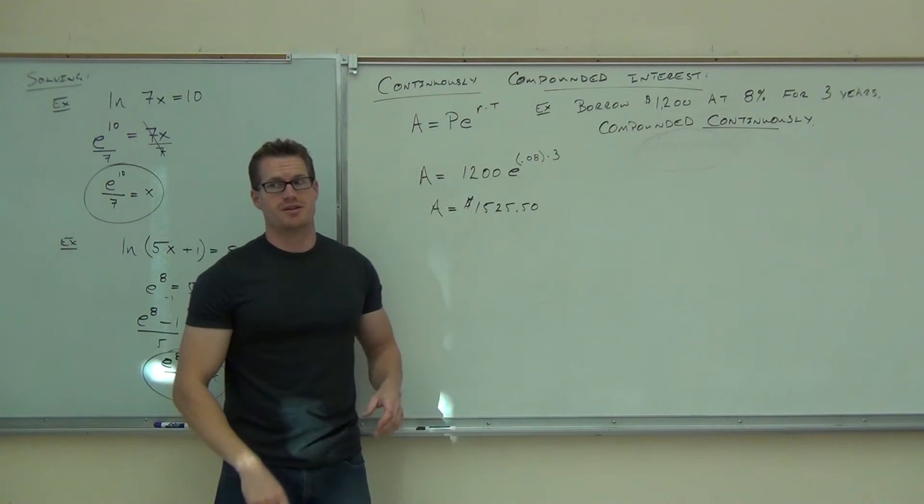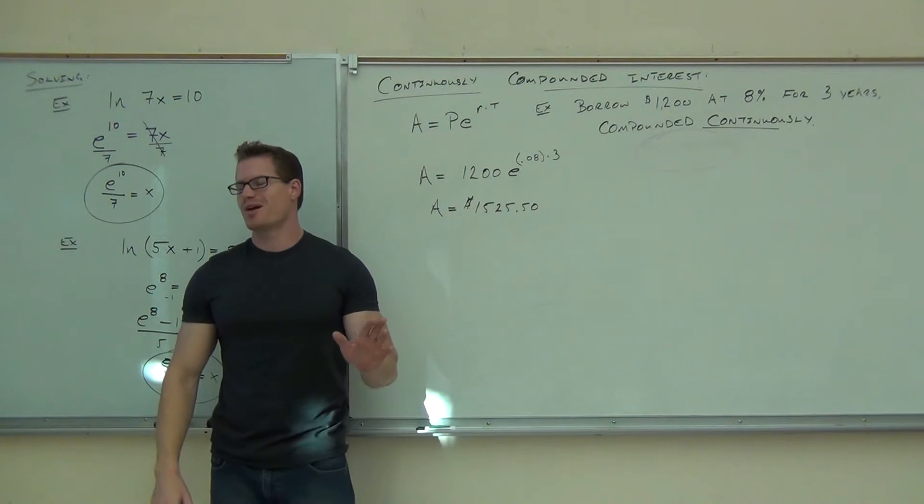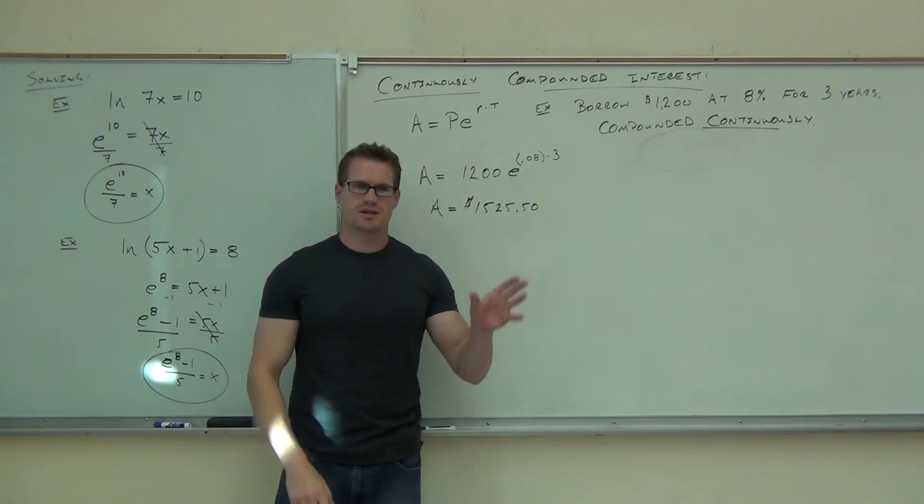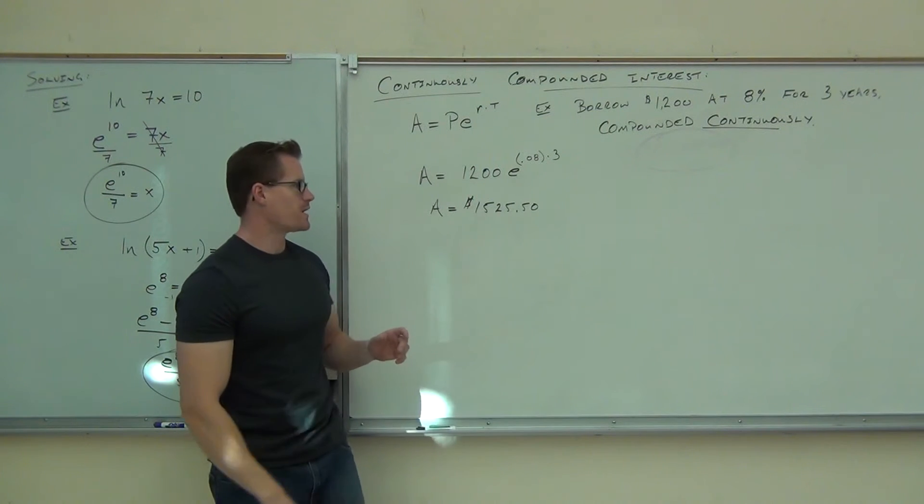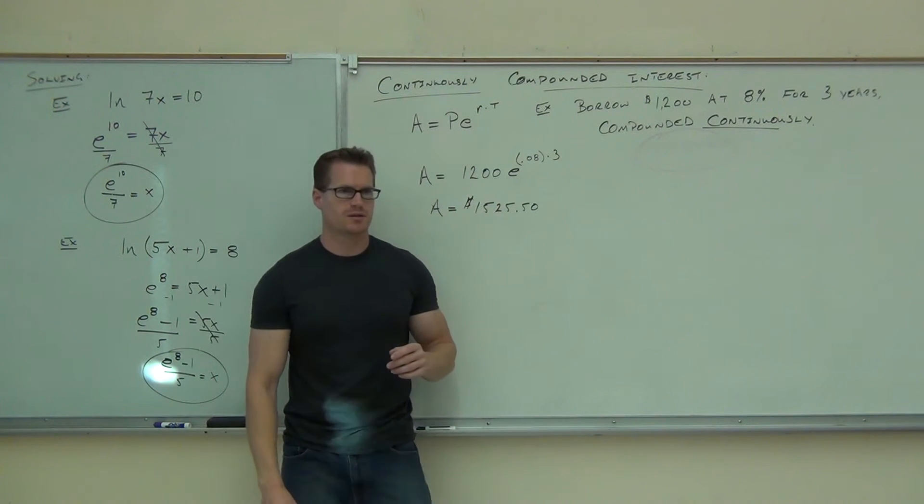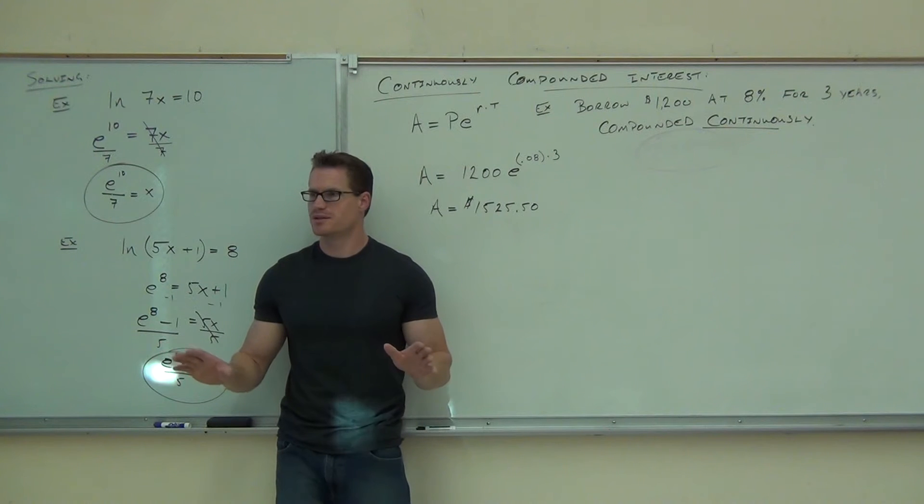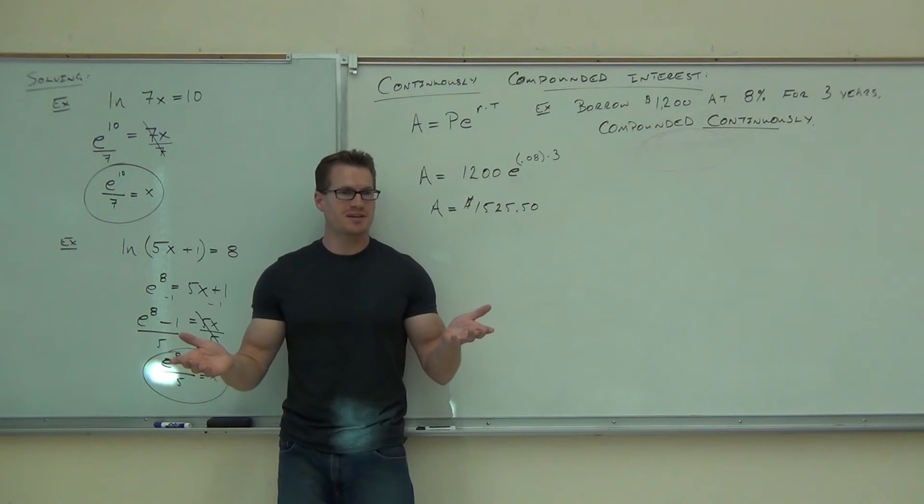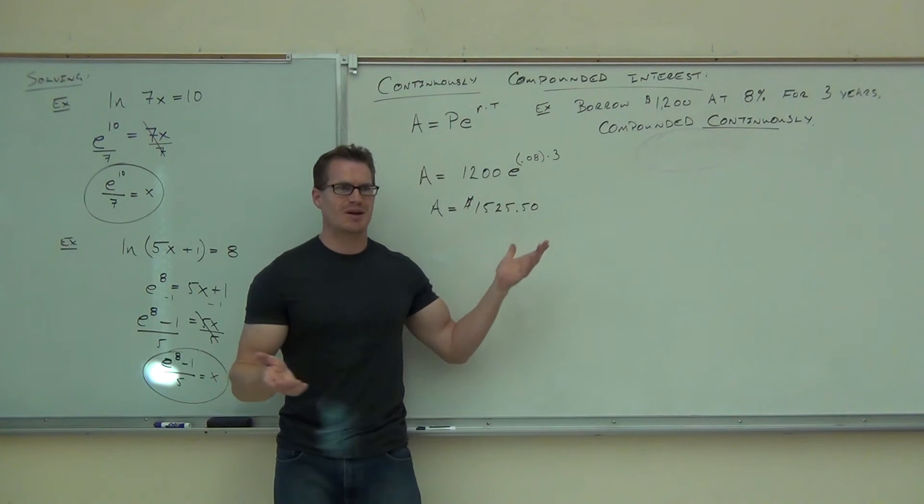So here's what's going to happen. You're going to come to me and go, Mr. Leonard, put me a loan, man. I go, no problem. I'm going to give you 1,200 bucks. In three years, you give me back $1,525.50. No payments until then. Would you do it? If you needed the money, you might. If you really needed it. By the way, I don't have any money to loan, so don't come ask me. But if I did, that's the loan I would give you.